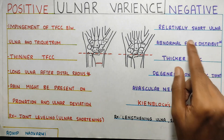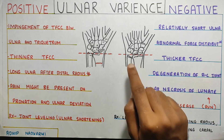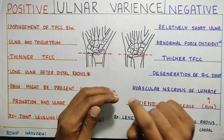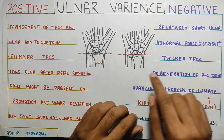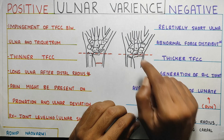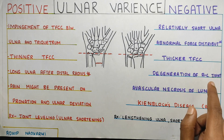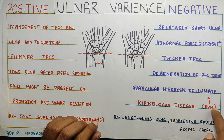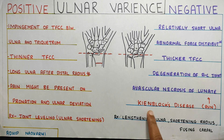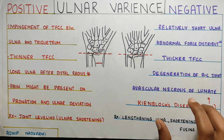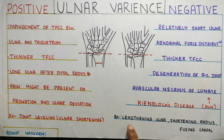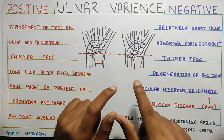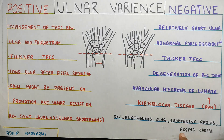Negative ulnar variance involves a relatively short ulna, causing abnormal force distribution. Too much force is placed on the radial region because the ulna is not bearing weight, and the TFCC will be much thicker. This excess force can lead to degeneration of the radiocarpal joint and avascular necrosis of the lunate — which is associated with Kienböck's disease. Treatment involves either lengthening the ulna, shortening the radius to correct the imbalance, or fusing the carpals.